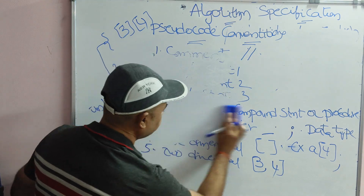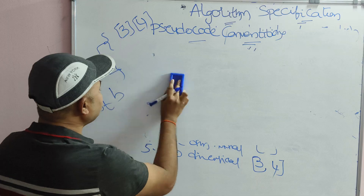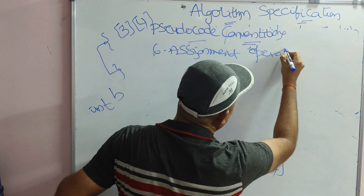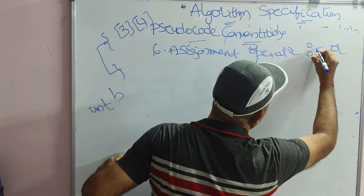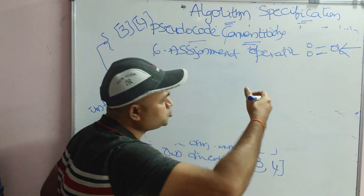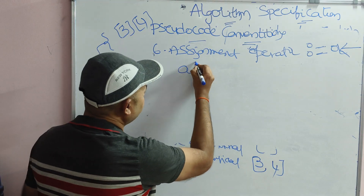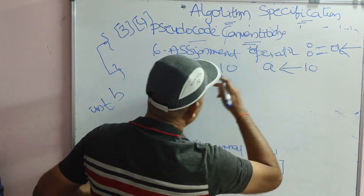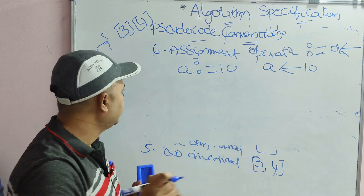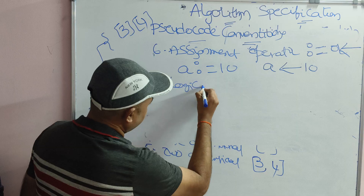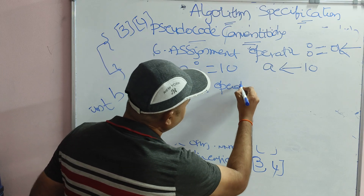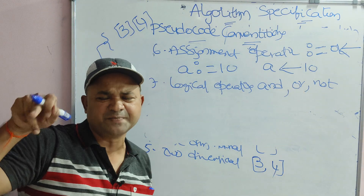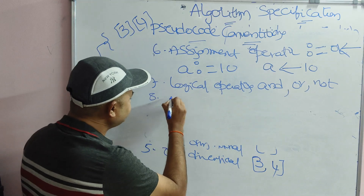Regarding operators: the assignment operator is denoted by colon-equal-to (:=) or the reverse arrow (←). For example, a := 10 or a ← 10. We cannot use plain equals (=) for assignment. Logical operators are denoted by 'and', 'or', and 'not' — there is no need to use double-ampersand or double-pipe symbols.